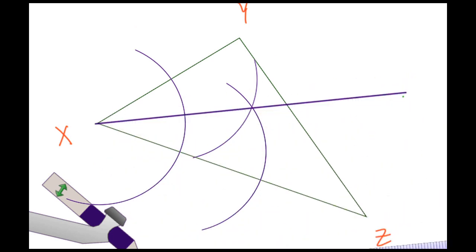Now let's go ahead and get rid of some of these excess markings, so these arcs here can go. Now I'm going to move on to vertex Y.